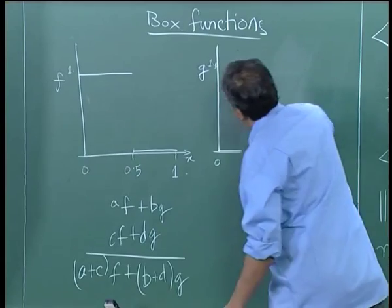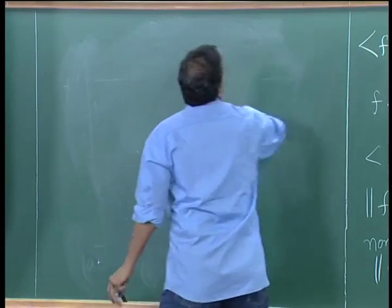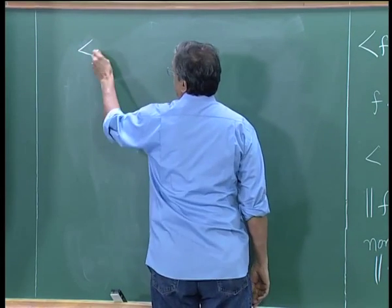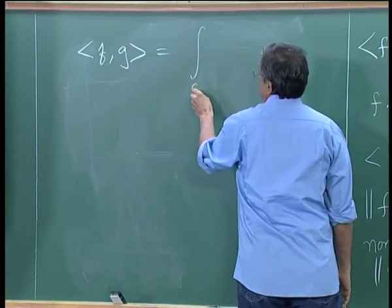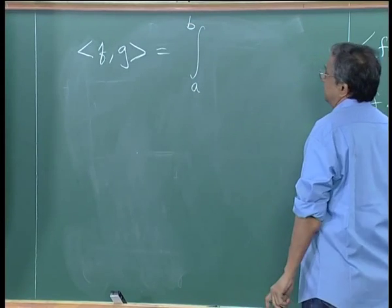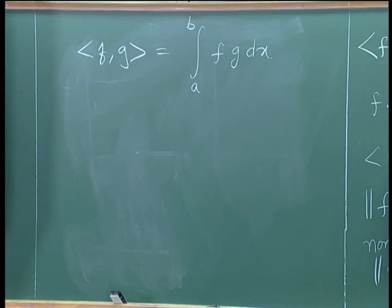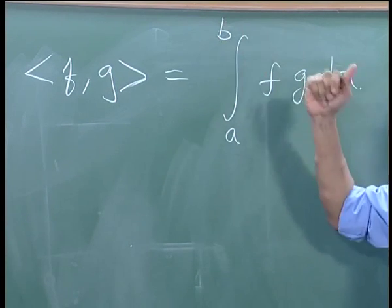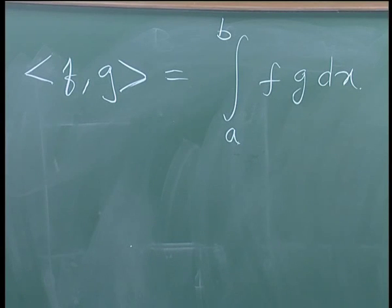We have now managed to repeat the process that we did for vectors. We can define a general dot product of two functions f and g: the functions could be defined on any two intervals a and b, and the dot product is defined as the integral of fg dx. In general it need not be [0,1] — I will do everything here as [0,1] but the definition is not restricted to that.